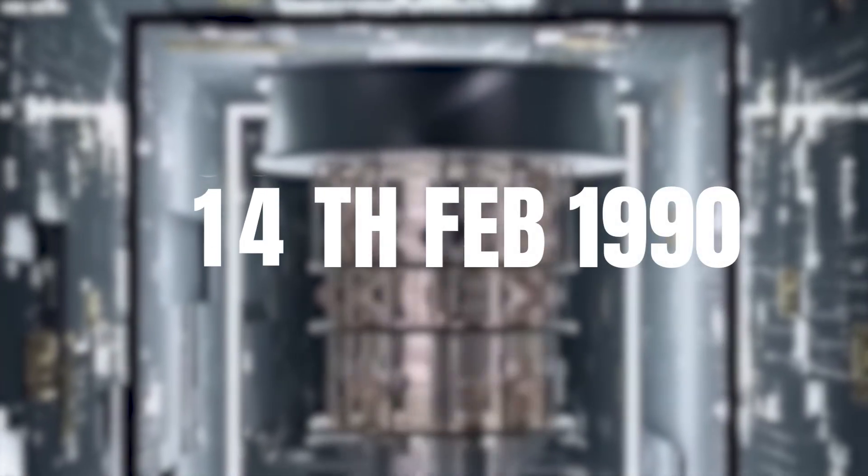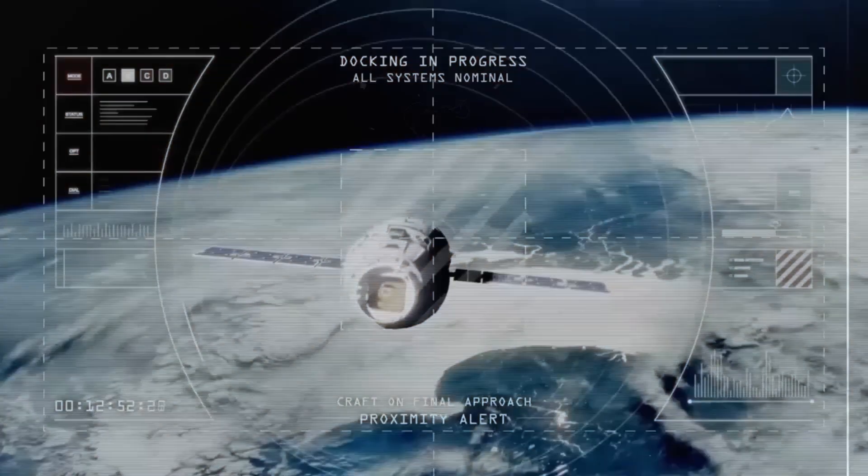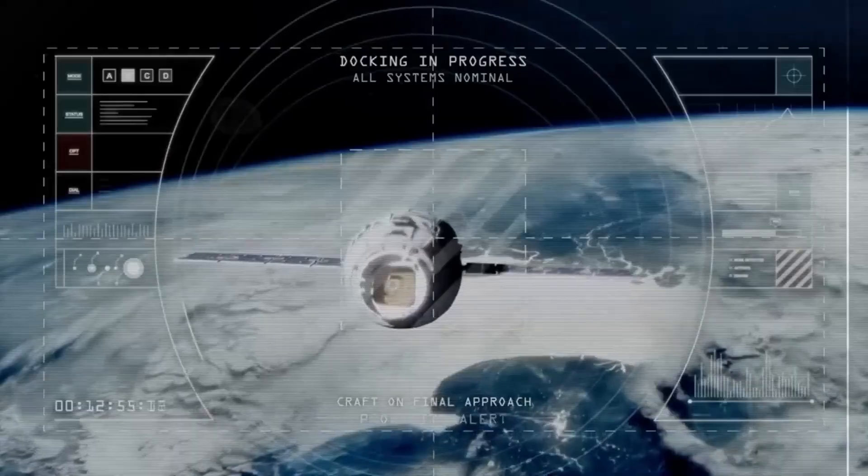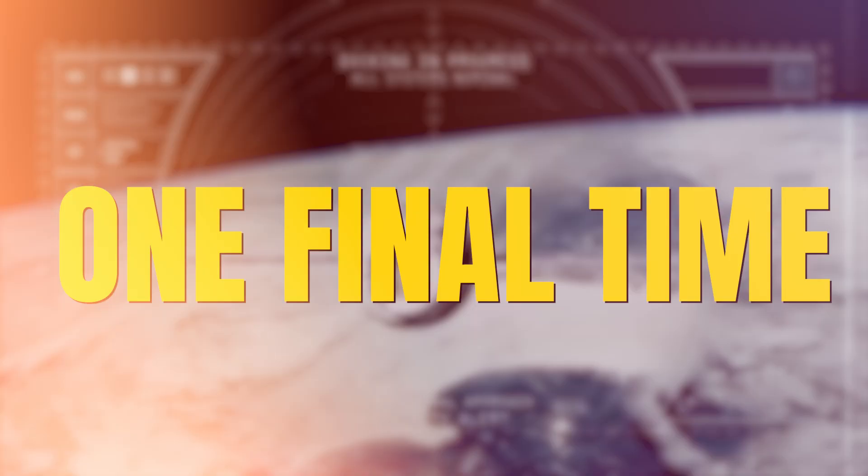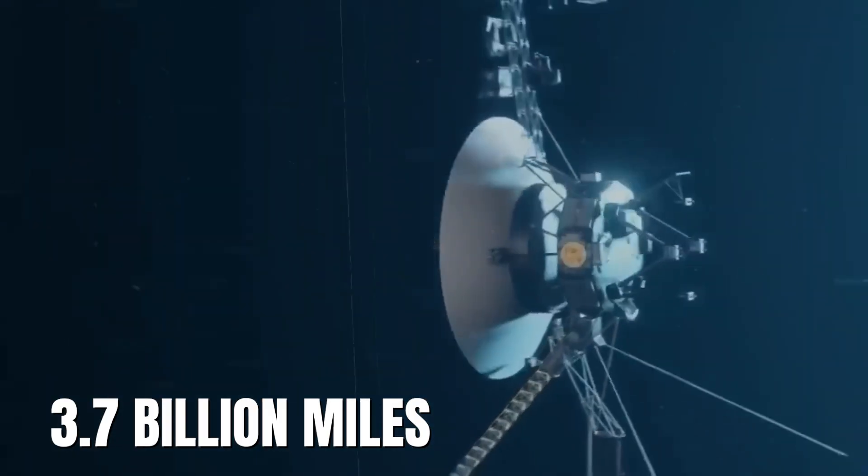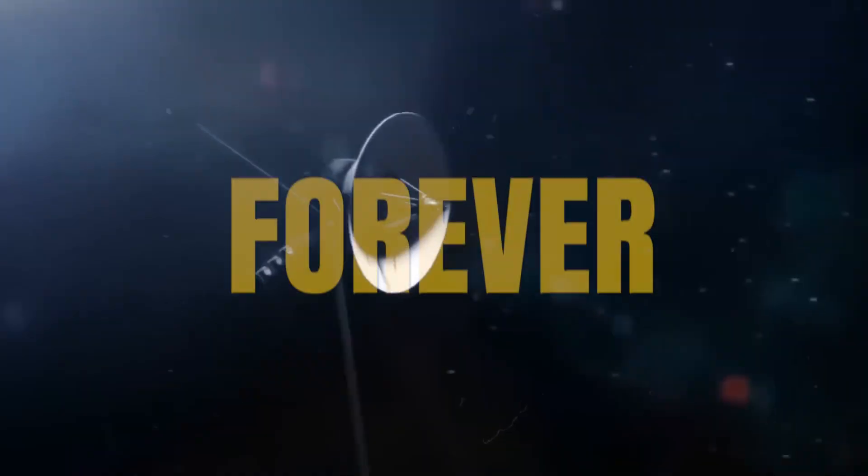February 14th, 1990. Voyager 1 turned its camera back toward Earth one final time. From 3.7 billion miles away, it captured a single pixel of pale blue light. Then NASA shut the camera off forever.